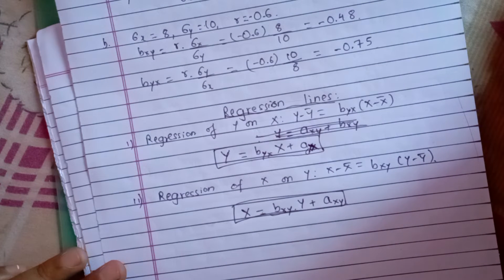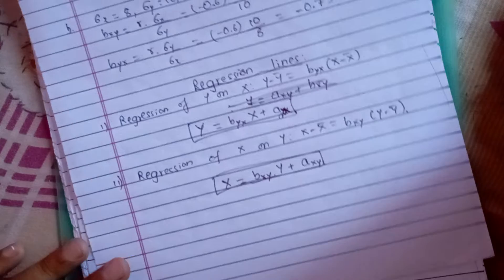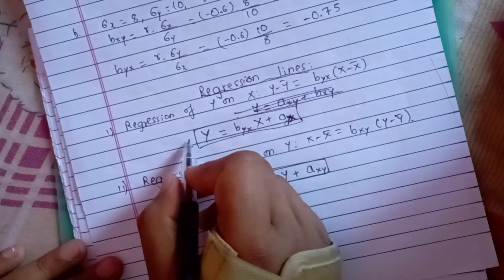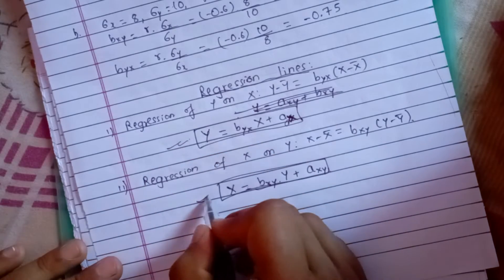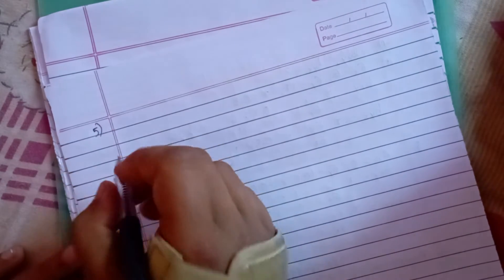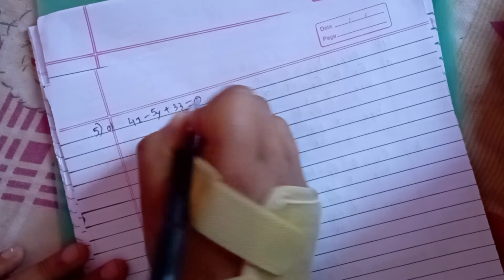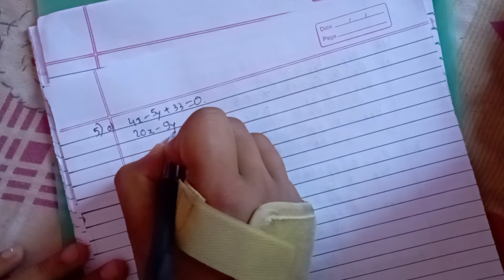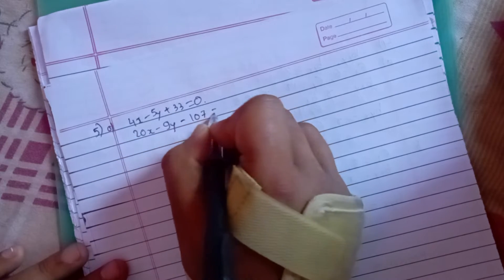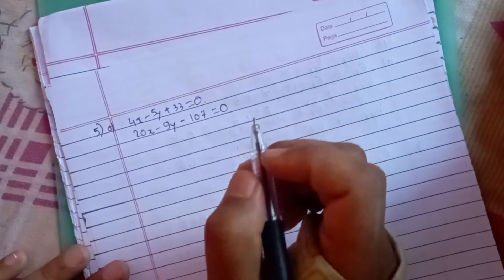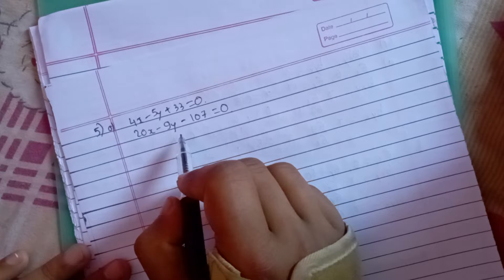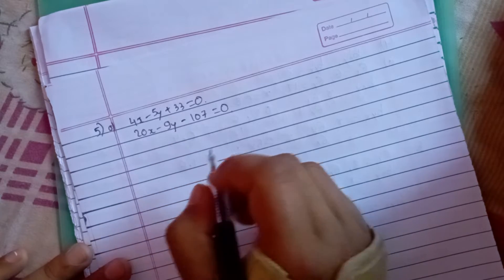Now we can get the exercise to solve the problem. We will get the pair of regression equations. The question gives us two equations: 4x minus 5y plus 33 equals 0, and 20x minus 9y minus 7 equals 0. Now we will get the regression equation of x and y.